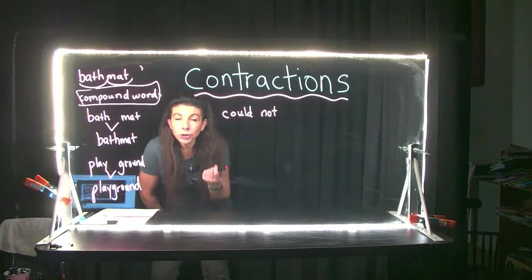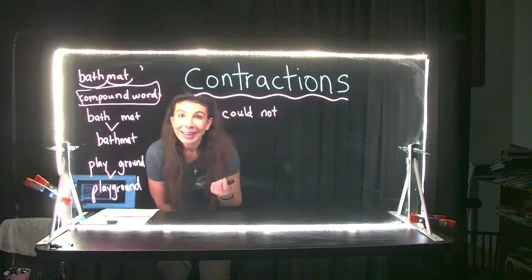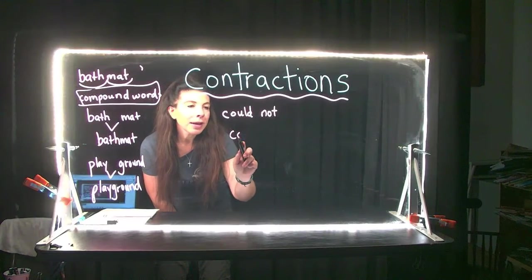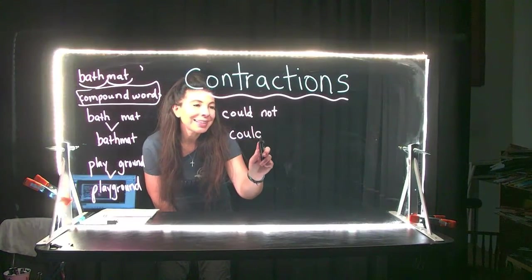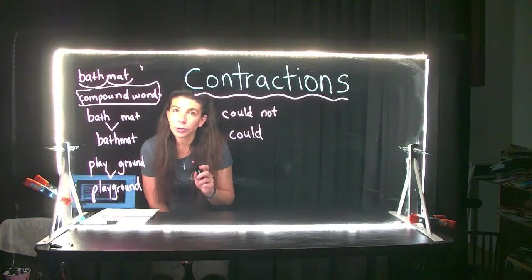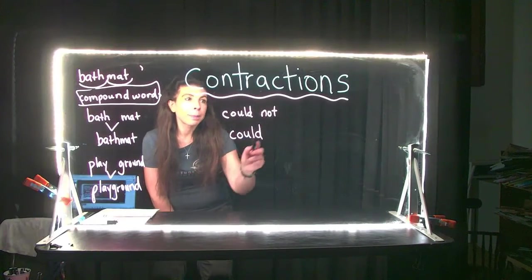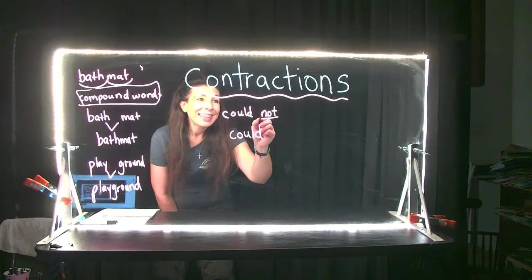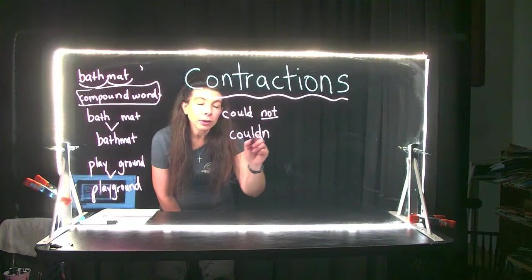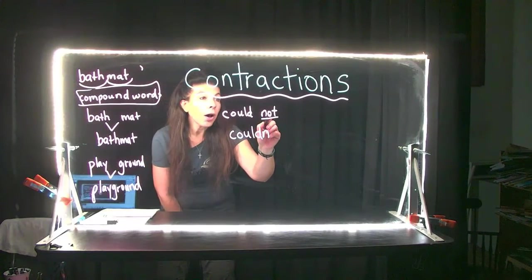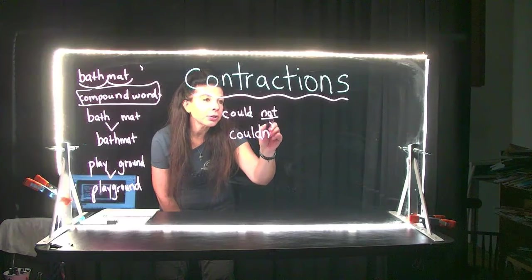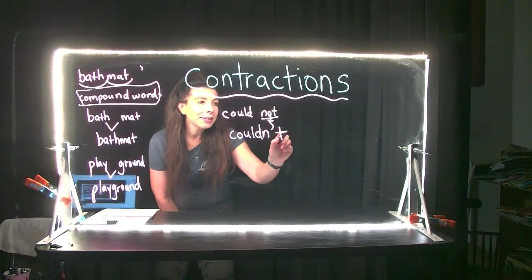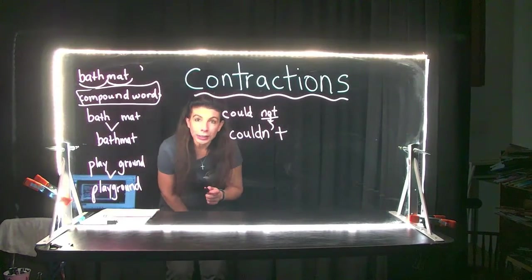So we're going to make the contraction 'couldn't.' We put 'could' and 'not' together. When you make that contraction, 'could' stays exactly the same — we spell it exactly the same. The N comes with 'could,' the O is replaced by an apostrophe, and then the T is at the end. Couldn't.